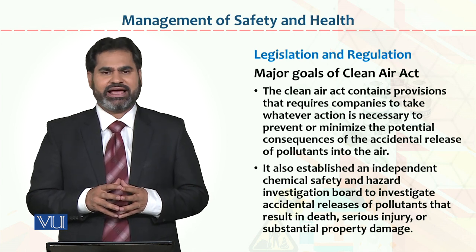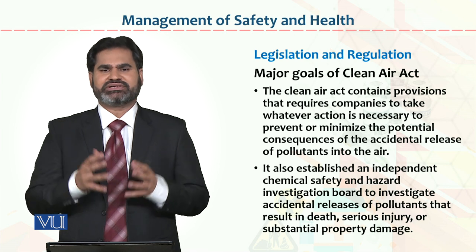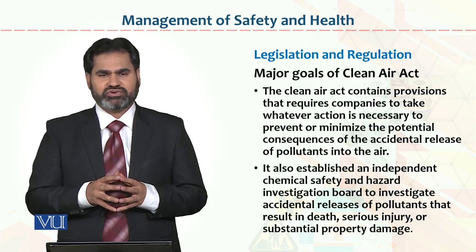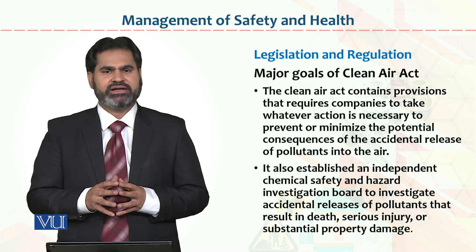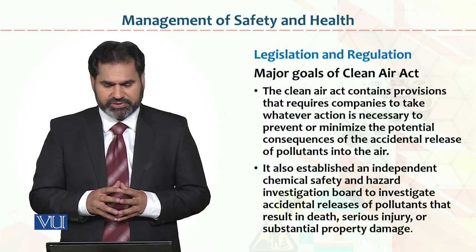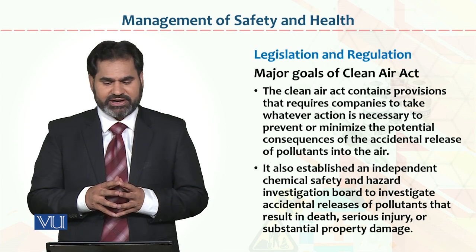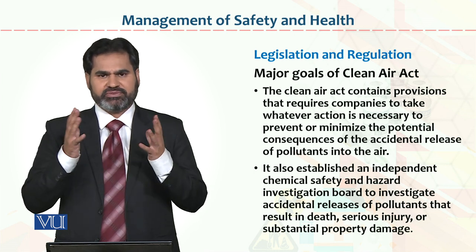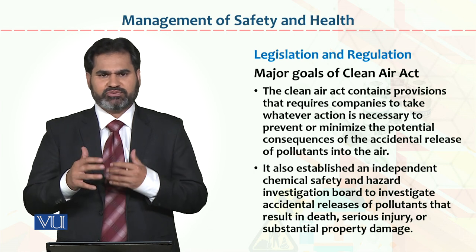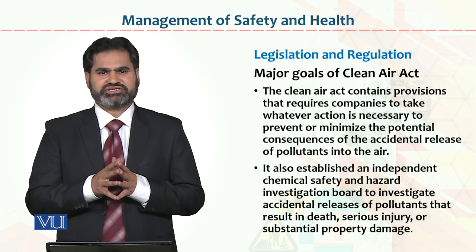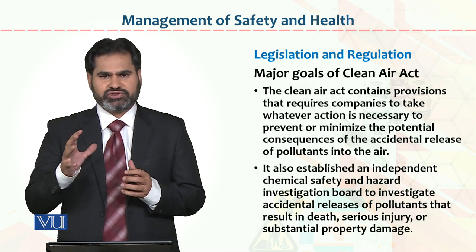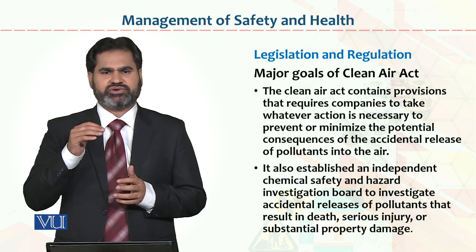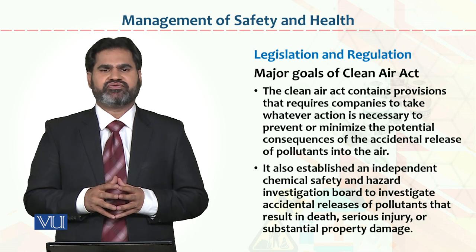Major goals of the Clean Air Act — Clean Air Act jaise ke naam se zaahir hai, ke agar hum chahate hain ke hamari jo air hai, faza hai, hawa hai, woh clean rahe, toh us ke liye kuch steps lene honge. The Clean Air Act contains provisions that require companies to take whatever action is necessary to prevent or minimize the potential consequences of accidental release of pollution into the air. Pollution ko air mein discharge hone se rokne ke liye mukhtlif qism ke plants pehle lagaye jayen, taaki woh pollution us condition mein develop na ho. Pollution ke andar jo contaminated cheezein hain, zahrila mawaad hai, us ko khatam kiya jaye, aur phir ek specific space ke upar ja ke us ko discharge kiya jaye taaki jo environment hai us ko pollution-free rakha ja sake.